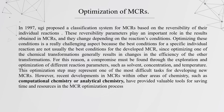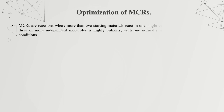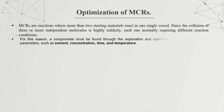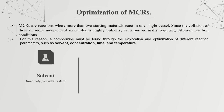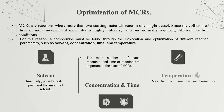Recent developments in computational chemistry and analytical chemistry have provided valuable tools for saving time and resources in MCR optimization. Since the collision of three or more independent molecules is highly unlikely, each normally requires different reaction conditions, so a compromise must be found through optimization of parameters such as solvent, concentration, time, temperature, and possibly pressure. When choosing a suitable solvent, one should consider reactivity, polarity, boiling point, and the amount of solvent. Concentration and reaction time are also important, as is temperature — whether the reaction is exothermic or endothermic — while considering the melting and boiling points of all components, as some may decompose.